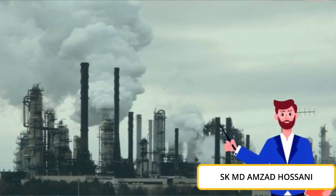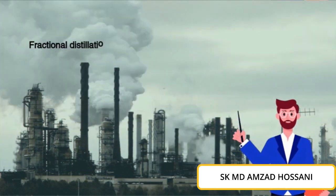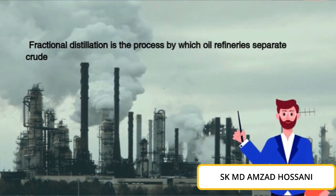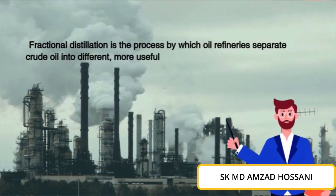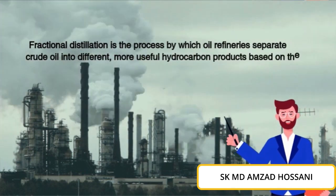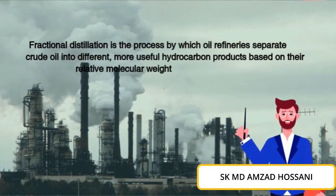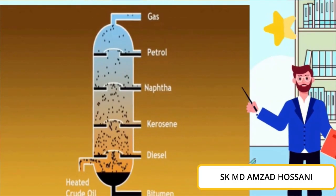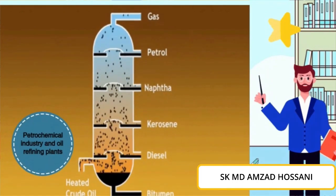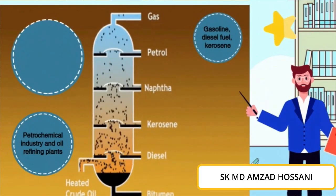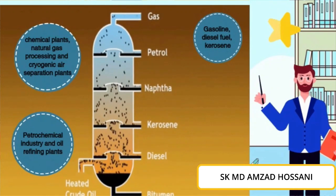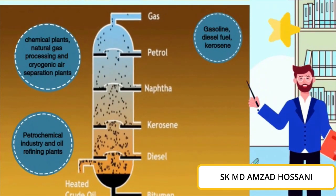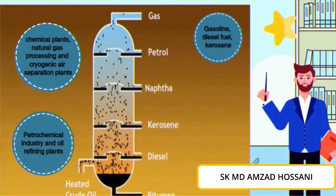Another type of distillation is Fractional Distillation. It is the process by which oil refineries separate crude oil into different, more useful hydrocarbon products based on their relative molecular weight in a distillation tower. Similar to steam distillation, fractional distillation is also used in the chemical industry, oil refining, and natural gas processing at companies like Petronas. We can say that these two types of distillation are very important for plant design in chemical engineering.